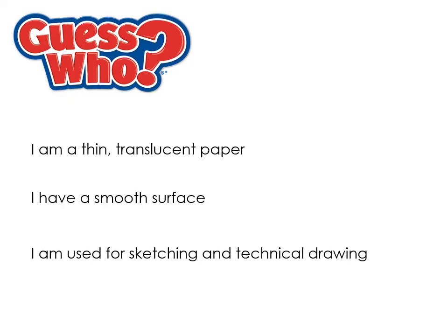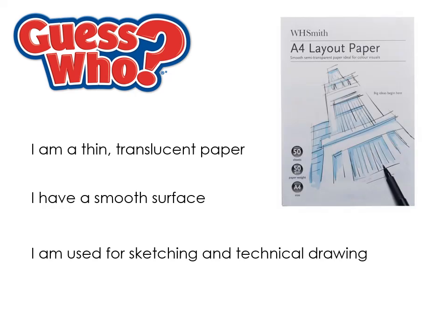Layout paper is thin translucent paper with a smooth surface, used for sketching and technical drawing. It's also slightly see-through, which helps for transferring sketches from one page to another. That covers all the main things you need to know about papers and boards and polymer film and sheet materials. Make sure you know a use and a couple of properties of each.